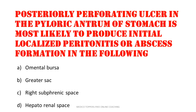A posteriorly perforating ulcer in the pyloric antrum of the stomach is most likely to produce initial localized peritonitis or abscess formation in which place? Omental bursa, greater sac, right subphrenic space, or hepatorenal space. If you are clear with the anatomy, you can easily guess the answer. The answer is omental bursa.